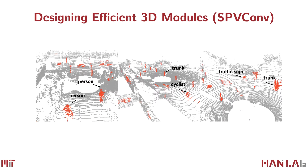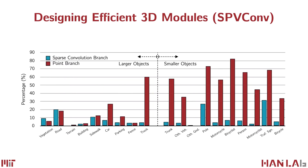As shown in these figures, the point-based branch learns to put its attention on small objects on the road, such as pedestrians and cyclists. Notice that these small objects are usually ignored by the sparse convolution branch, which puts its attention on only less than 10% of pedestrians, bicycles, and cyclists.